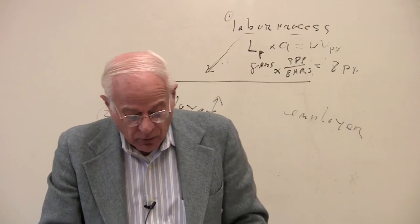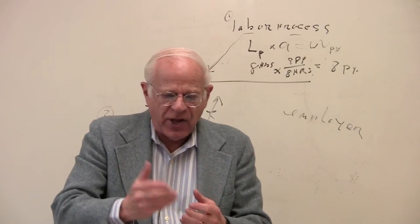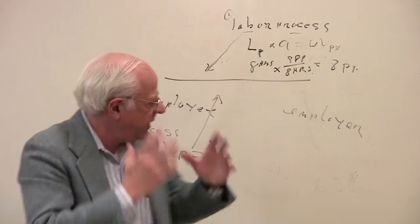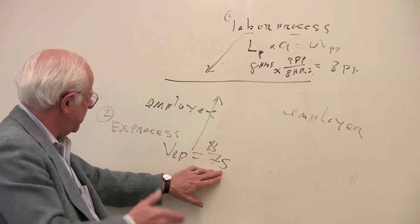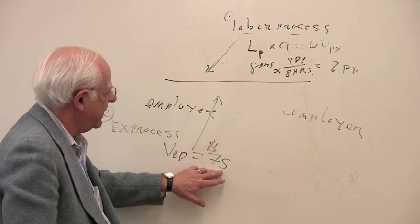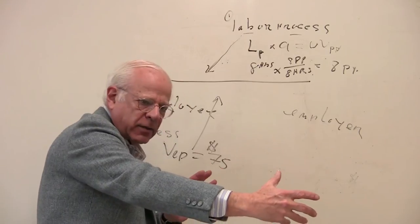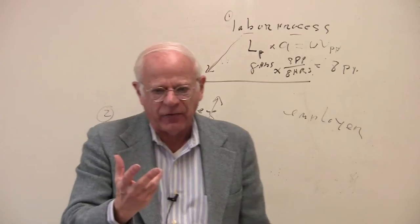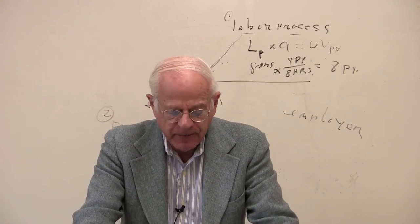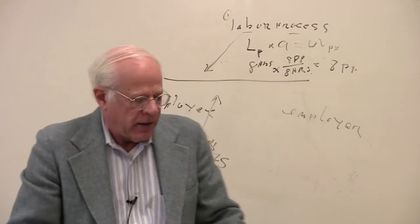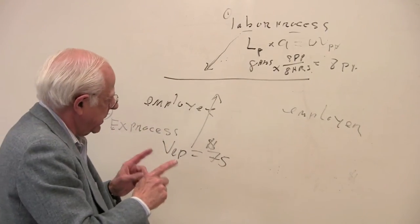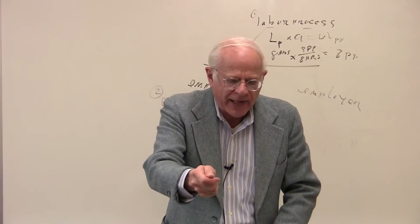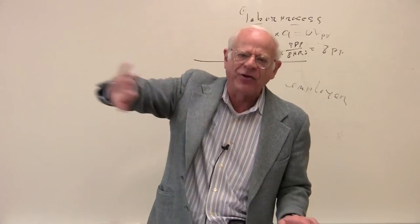So the value added by workers is not taking a value form. Nothing is being produced for sale. Then you can ask the question, where the heck does this $75 come from? The employer is paying the workers $75, but there's no value, like in the first example I gave you, out of which that $75 is coming. So where is it coming from, and why on earth would an employer do this? The answer is that the employer, in this case, is taking this $75 from the surplus value that the employer gets from other kinds of workers.